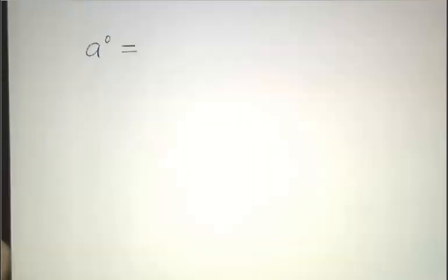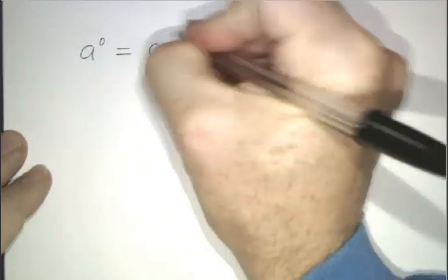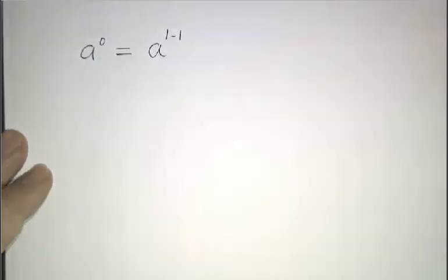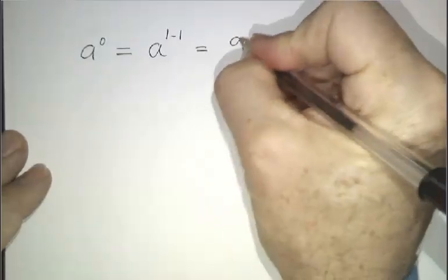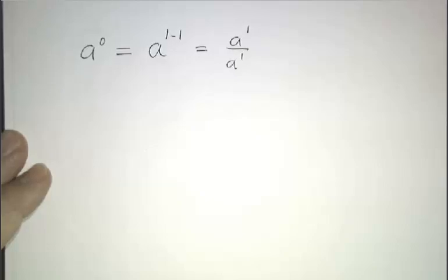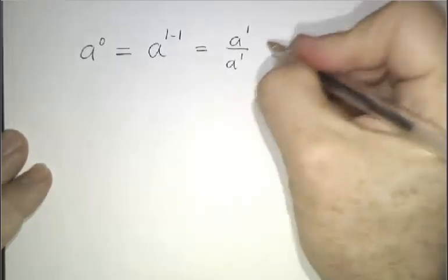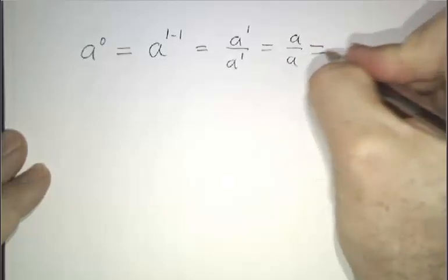We start off with the 0th power. Now, a to the 0 is a to the 1 minus 1, because 0 is 1 minus 1. And the law of exponents says that a to the 1 divided by a to the 1 is a to the 1 minus 1. And so this is just a divided by a, and of course that's 1.